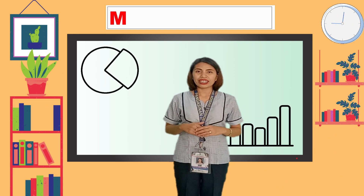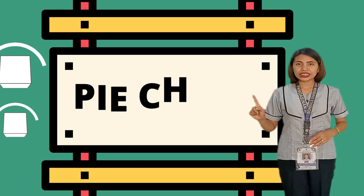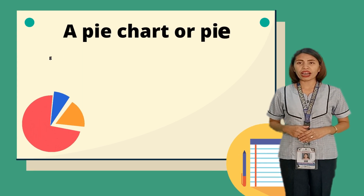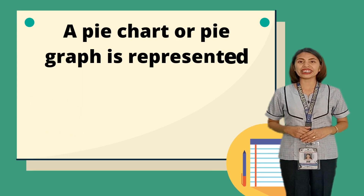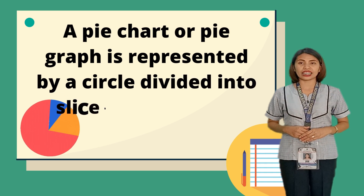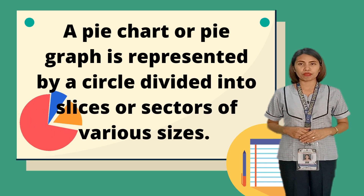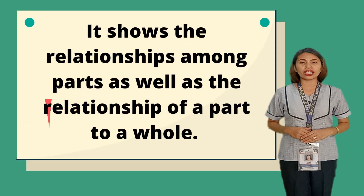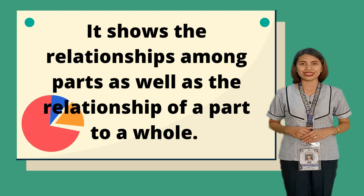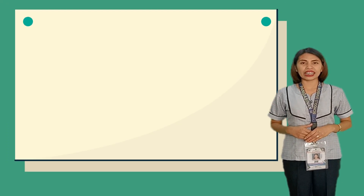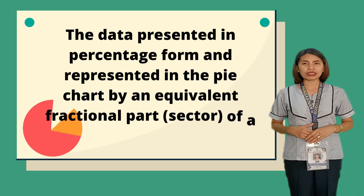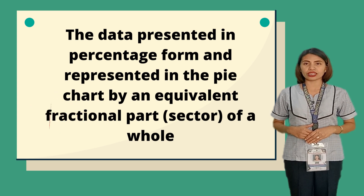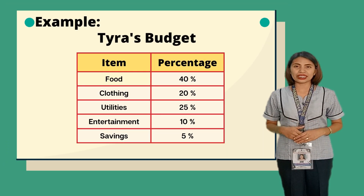Sit back, relax, and enjoy! The first type of presenting data is a pie chart. A pie chart or pie graph is represented by a circle divided into slices or sectors of various sizes. It shows the relationships among parts as well as the relationship of a part to a whole. The data are presented in percentage form and represented by an equivalent fractional part or sector of a group.